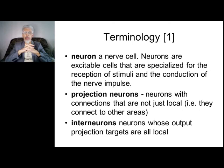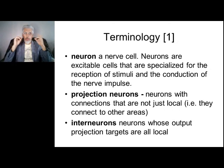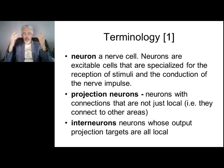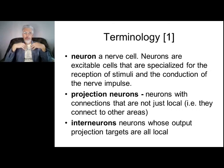Information coding in the nervous system depends on impulse ratio. Different information corresponds to different impulse rates. The input signal is impulses and the output signal is impulses. The primary generators of impulses are receptors, which generate impulses from the surrounding environment and from the inner organs.